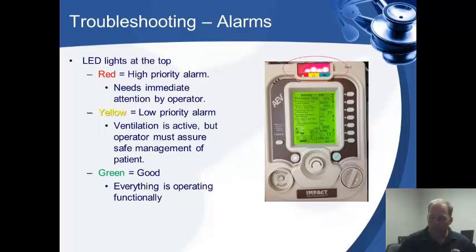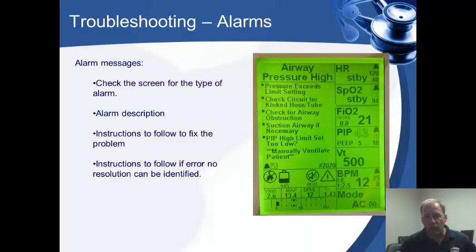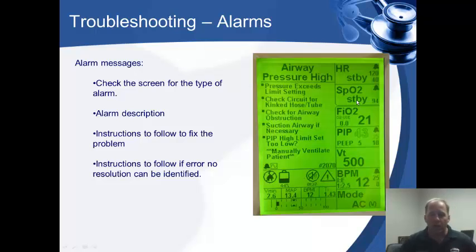You may see an alarm that says 'pressure exceeds limit setting.' Check the circuit for a kinked hose or tube, check the airway for obstruction, and suction out the airway. Is your peak inspiratory pressure high limit set too low? If you think you need to allow peak inspiratory pressures a little above the normal setting due to the patient's condition, raise that upper limit — just push the button next to the PIP pressure and highlight the upper limit, then adjust it up a bit so you're not alarming constantly.